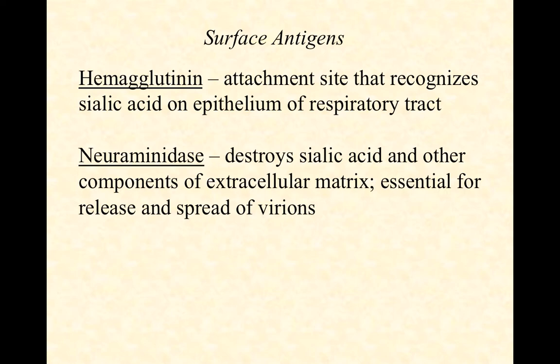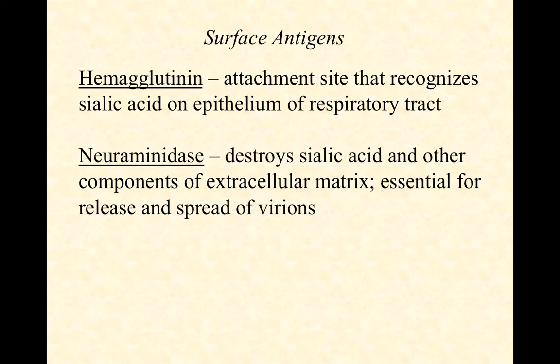Neuraminidase, on the other hand, is an enzyme that can break down sialic acid as well as possibly some other components of the extracellular matrix. Remember, in humans we don't have a cell wall, so our tissues rely on extracellular material — an almost gelatin-like material made of long fibers of polysaccharides and proteins — for cushioning, support, and structural integrity. This also means it's hard for some viruses to get in, and hard for them to get out. We know for sure that neuraminidase is essential for the release of new virions from a eukaryotic cell that has been producing influenza.